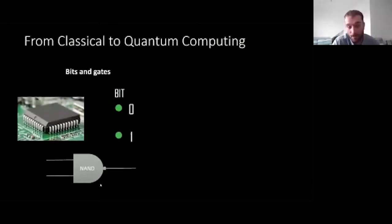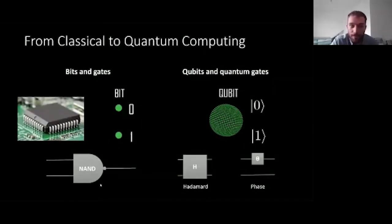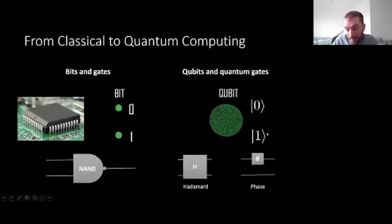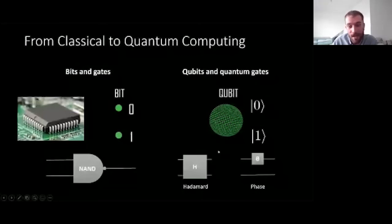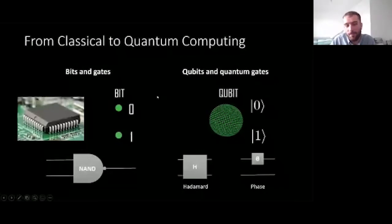The quantum equivalent uses qubits and quantum gates. Qubits are usually represented on a sphere — the Bloch sphere — and you still only measure a zero or a one at the output, but they are quantum states denoted in Dirac notation. We have quantum gates like the Hadamard gate and the phase gate. Similarly to classical computing, there exist gate sets with which you can perform everything a quantum computer can do — you need qubits and the right gates.